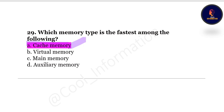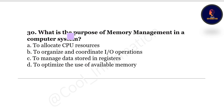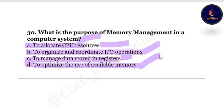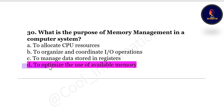Question 30: What is the purpose of memory management in a computer system? Option A: to allocate CPU resources, Option B: to organize and coordinate input-output operations, Option C: to manage data stored in registers, Option D: to optimize the use of available memory. The correct option is to optimize the use of available memory. Thank you, don't forget to subscribe to the channel — you are ingenious!